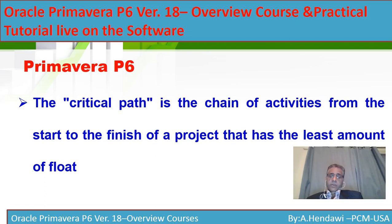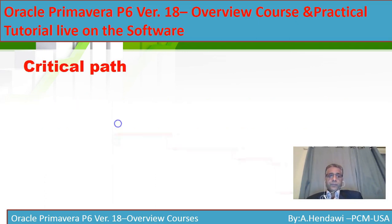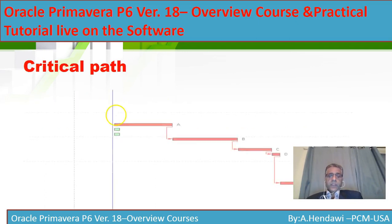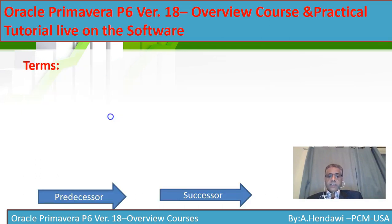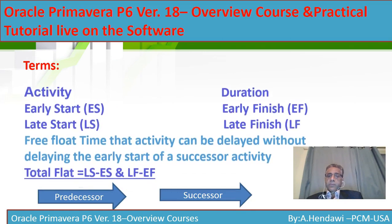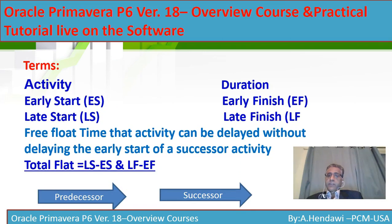Here's a model showing how the critical path goes from start to finish and how it looks in red. Most of the activity relationships are finish-to-start. Here are some terminology items that are really important for anyone working in project management.